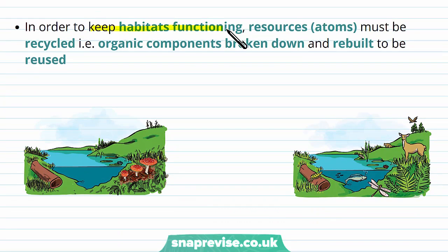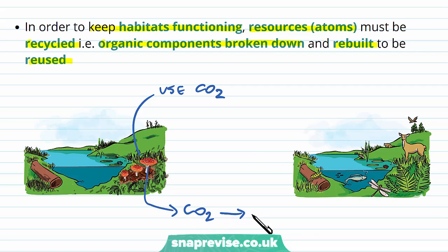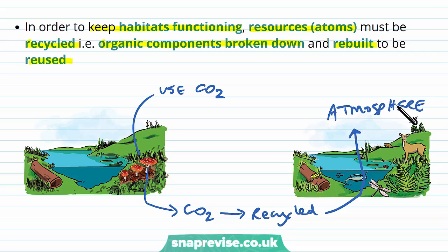In order to keep the habitats functioning, the resources — i.e. the atoms — have to be recycled, so the organic components get broken down and rebuilt to be reused. For example, plants use CO2, but the next generation of plants needs to use CO2 as well. So when they take the CO2, it gets recycled into other organic forms and put back into the atmosphere, and then future plants can use it again. This is the case for many different atoms, and therefore many different types of nutrient.